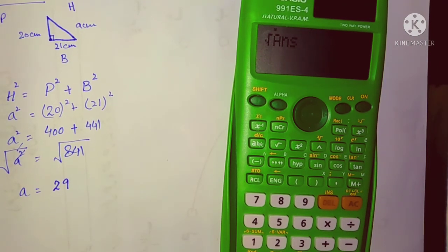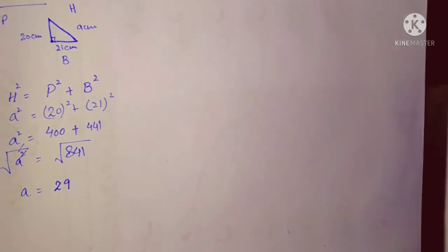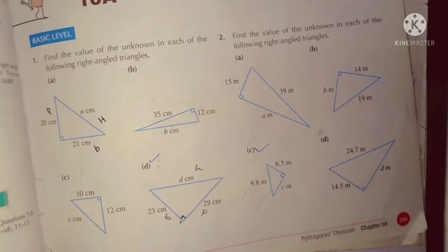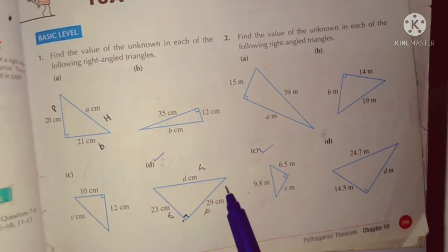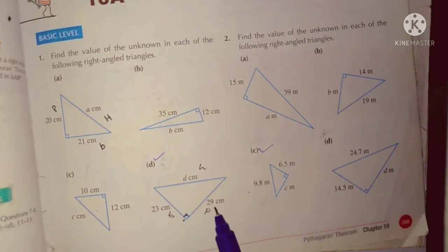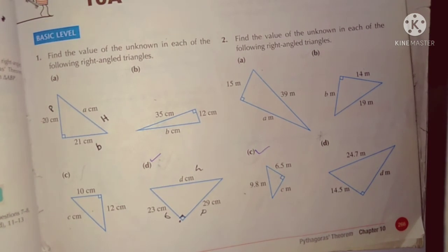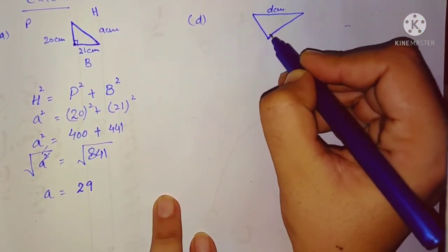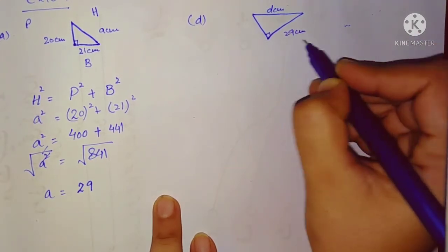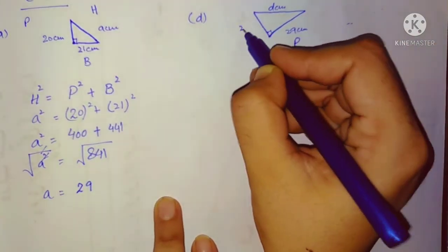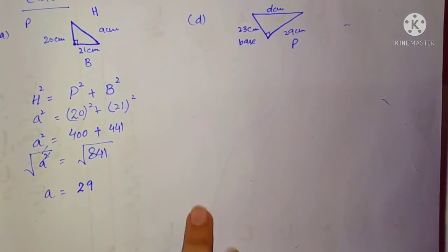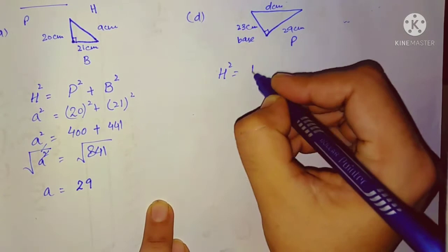Now I'm going to explain Part D. In Part D, this is the baseline and the line going straight up is your perpendicular. The baseline is 23 centimeters, the perpendicular is 29 centimeters, and the hypotenuse is 'd'. You have to find out the value of 'd'.